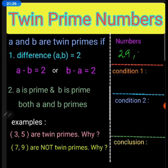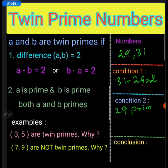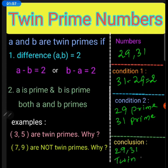Consider 29 and 31. Thirty-one minus twenty-nine equals two, so the first condition is satisfied. Twenty-nine is a prime number and thirty-one is also a prime number. Hence, 29 and 31 are twin primes.